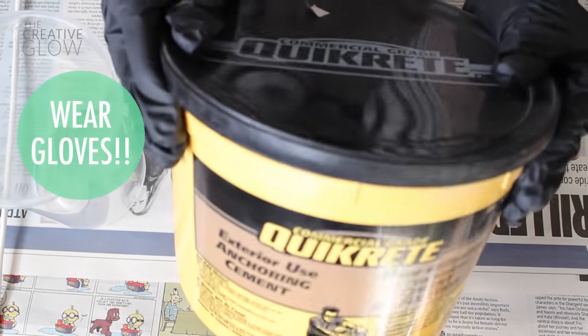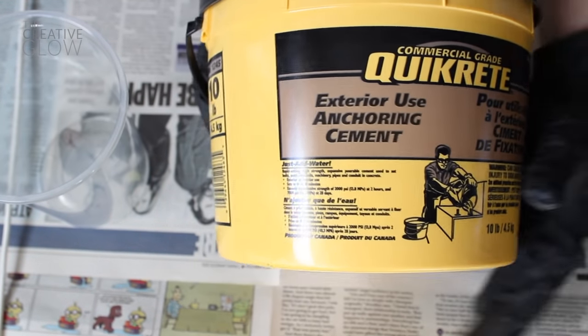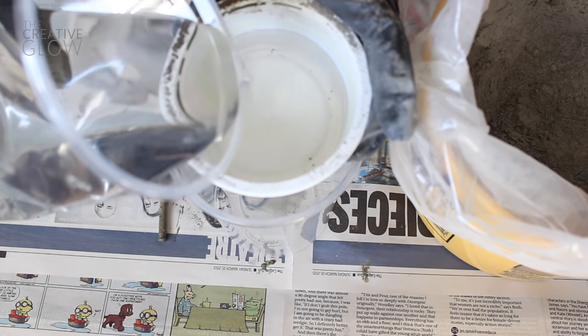Now is the messy part we need to mix our cement so I'm using this anchoring cement from Kwikrete. A lot of people use rockite which I could not find and this was the product that sounded the closest. We want our cement to be a little more liquidy than the directions say so we're going to do four parts cement powder to one part water and then adjust if we need to.